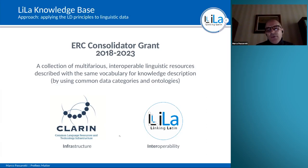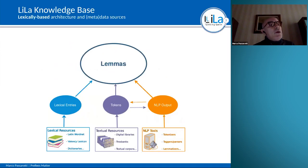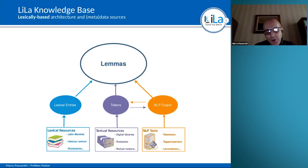While CLARIN is an infrastructure — one centralized repository where you store linguistic resources — the objective of linguistic linked data is interoperability between distributed resources, not necessarily stored in just one place. Specifically, this is the objective of Linking Latin for what concerns linguistic resources for Latin.